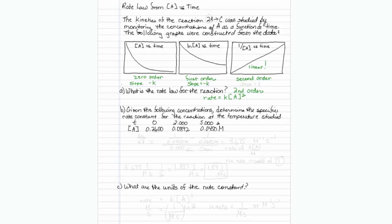This particular one, which is second order, the slope is equal to K. So we just need to find the slope. Now the old fashioned way of finding the slope is the change in Y over the change in X. So that's what we'll do.